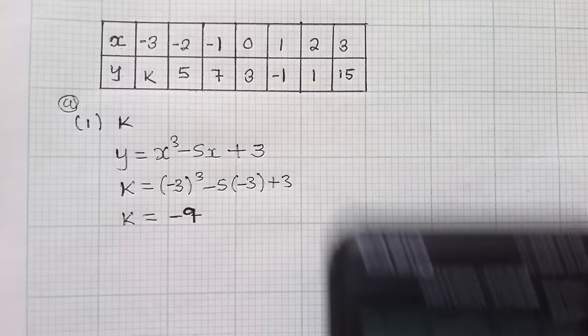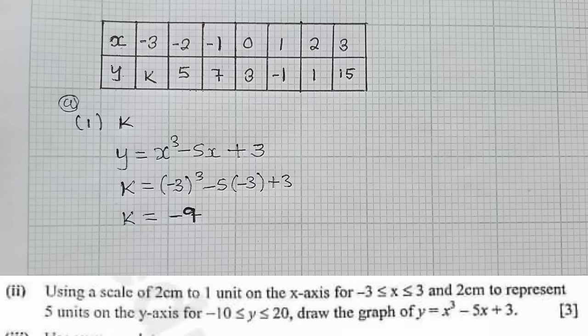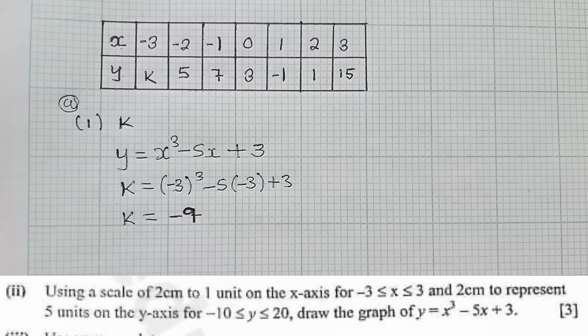So the next question here, they want us to graph. They have given us the range: using the scale of 2 centimeters to represent one unit on the X axis, with negative 3 less than or equal to X, less than or equal to 3, and 2 centimeters to represent 5 units on the Y axis, with negative 10 less than or equal to Y, less than or equal to 20. Draw the graph of Y equals X cubed minus 5X plus 3. The important thing here is to understand the scale.